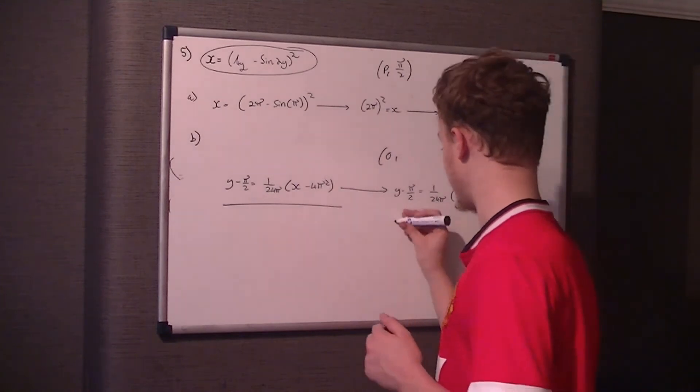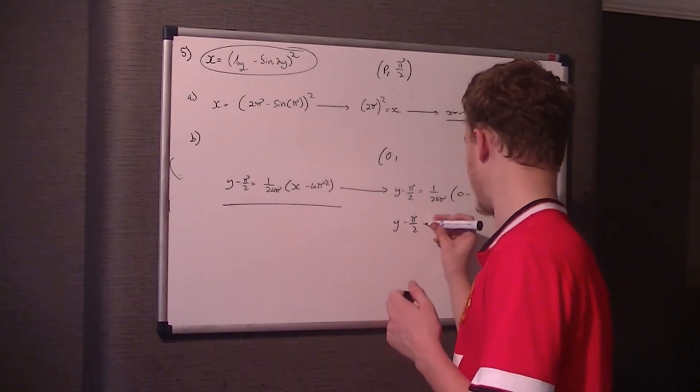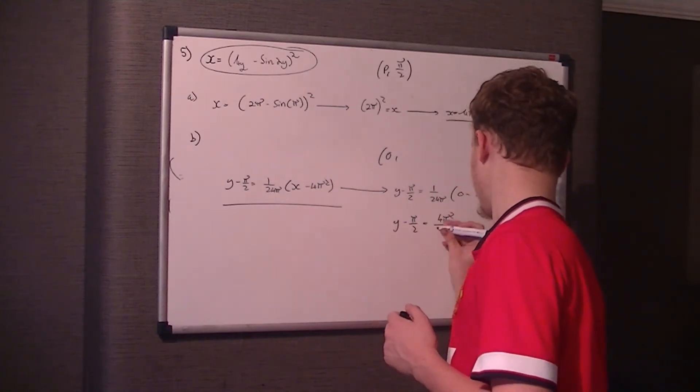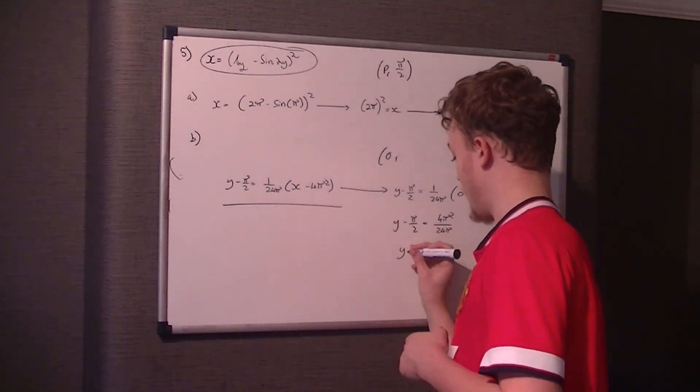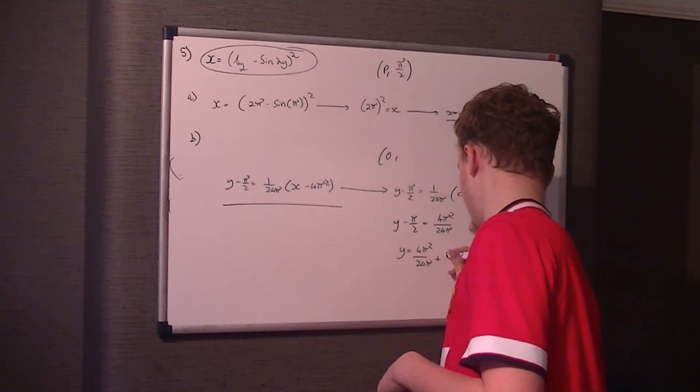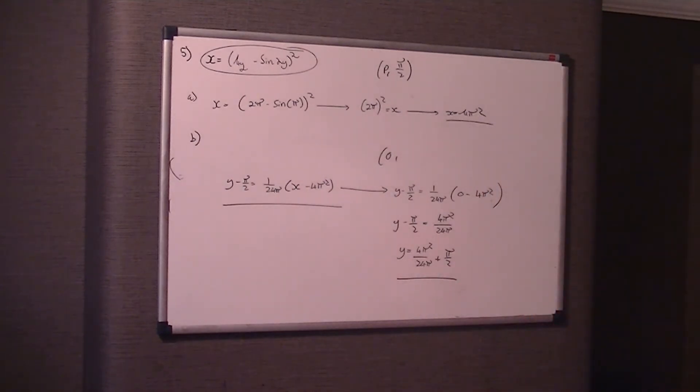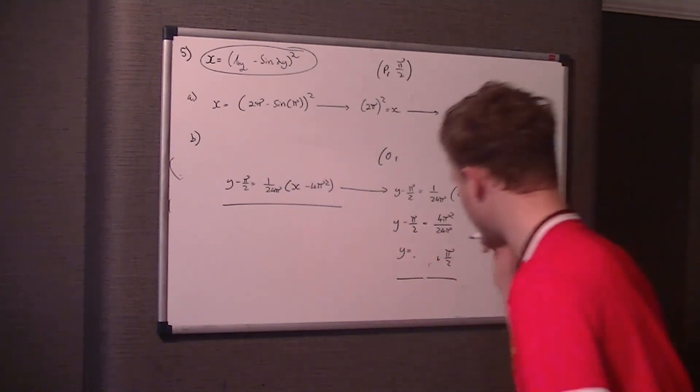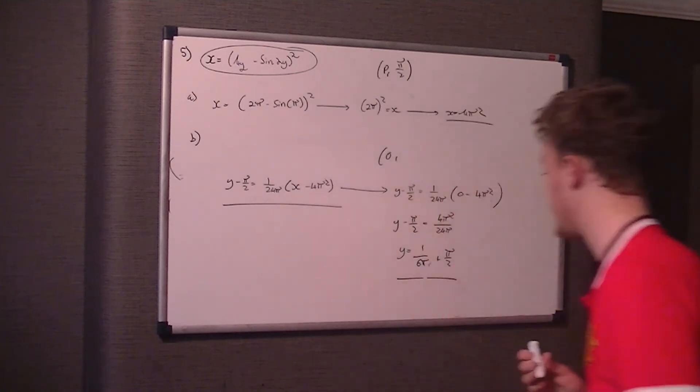Expand that out, obviously, so therefore, y take pi on two is equal to four pi squared over twenty-four pi. So therefore, y is equal to four pi squared over twenty-four pi plus pi on two. Now you could simplify that down if you want to, but that's totally up to you. So it's relevant for the actual mark to the question. So this is question five. So y is essentially one over six pi, sorry, plus pi on two.